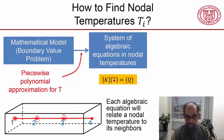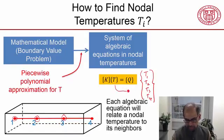T is a vector containing the nodal temperatures. So in our case, T is going to be T1, T2, T3, T4. That's what that's going to look like in our case.